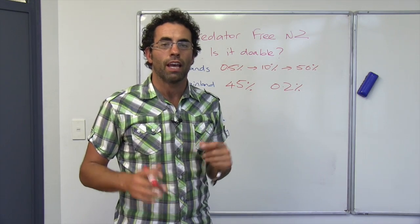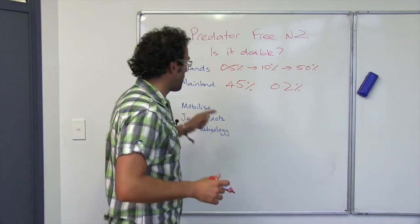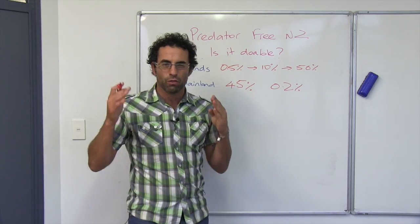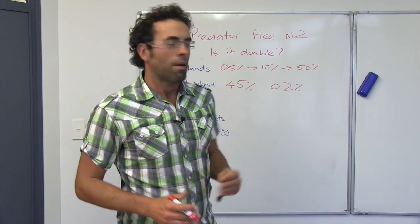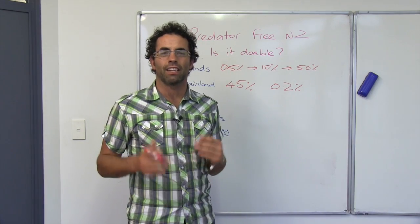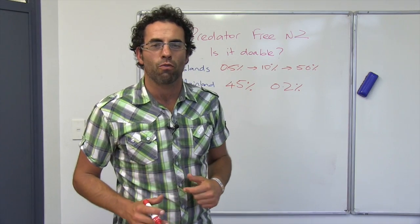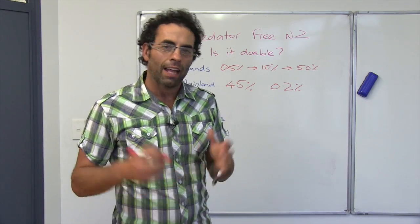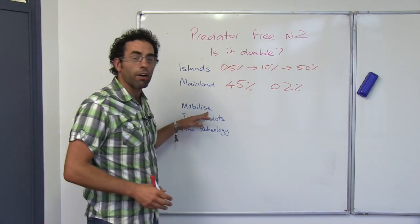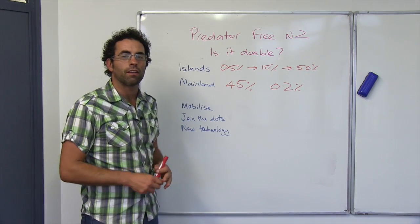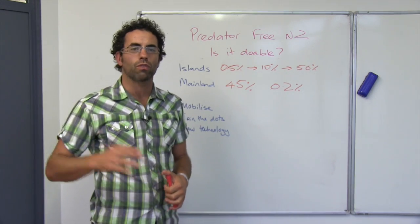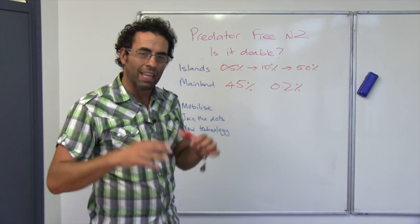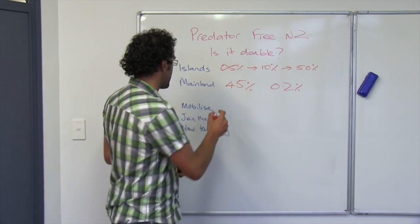And that is what Predator Free New Zealand is all about. Firstly, it's all about mobilizing people. This really is like a war. A hundred years ago we had World War I and now Predator Free New Zealand is our next war - the war on possums, rats and mustelids. And we are really going to need to mobilize people to do that, just as we did a hundred years ago. That means getting people out trapping in their backyards and in their local reserves and making sure that we take care of the wildlife that's there.